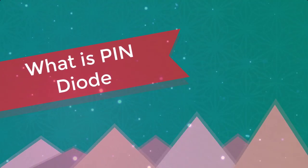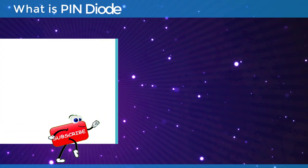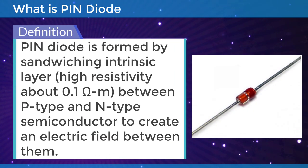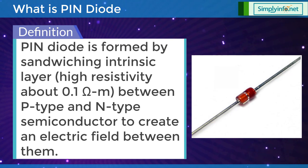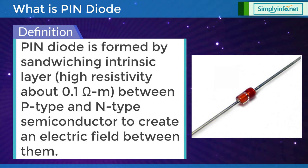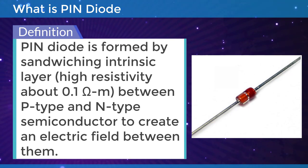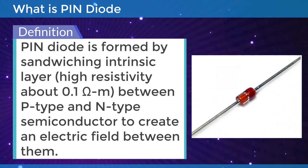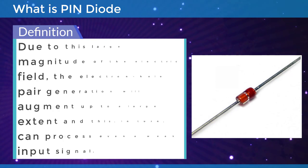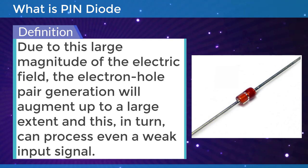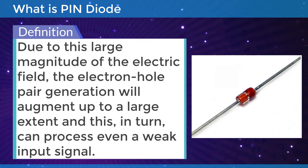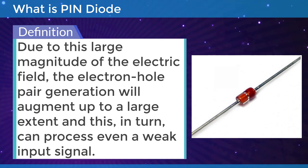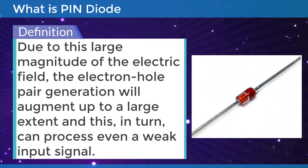What is a PIN diode? A PIN diode is formed by sandwiching an intrinsic layer of high resistivity, about 0.1 ohm meter, between P-type and N-type semiconductor to create an electric field between them. Due to this large magnitude of electric field, the electron-hole pair generation will augment to a large extent, and this in turn can process even a weak input signal.